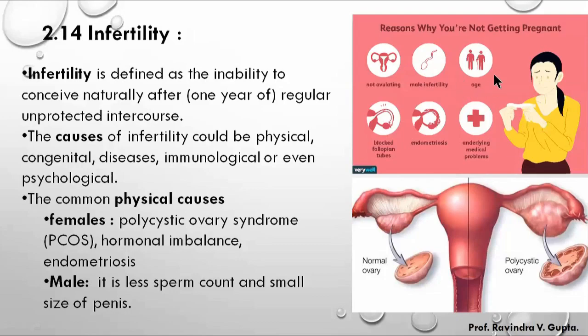Age is another factor — around the age of 45, hormone production becomes low in both males and females, specifically in females. Another cause is blockage of the fallopian tube.